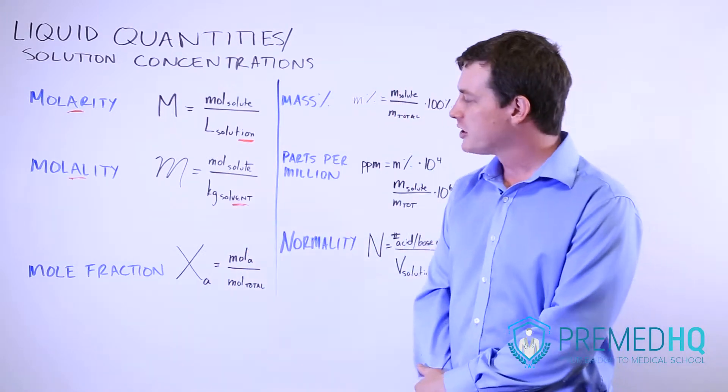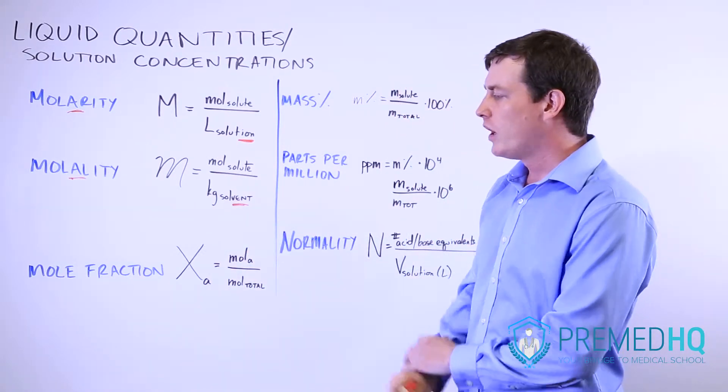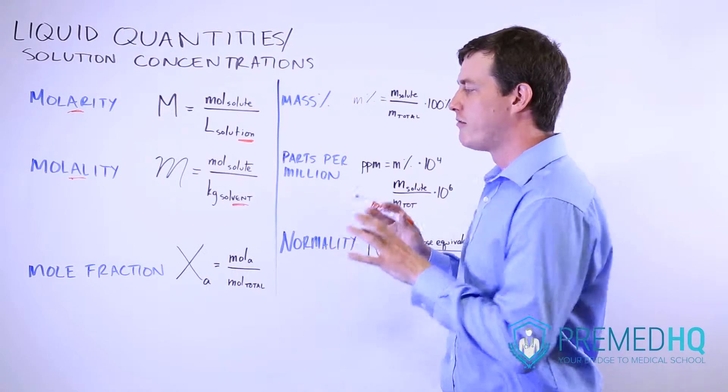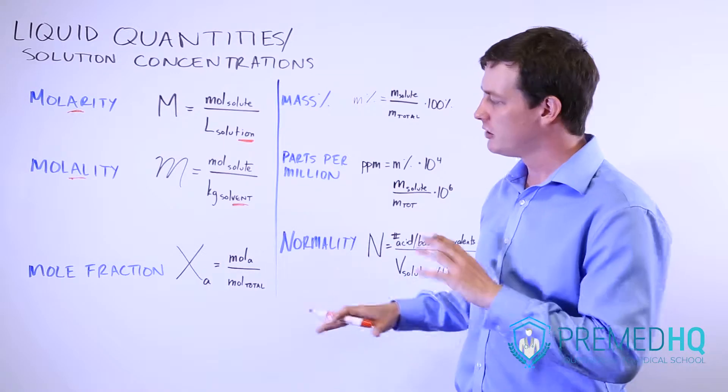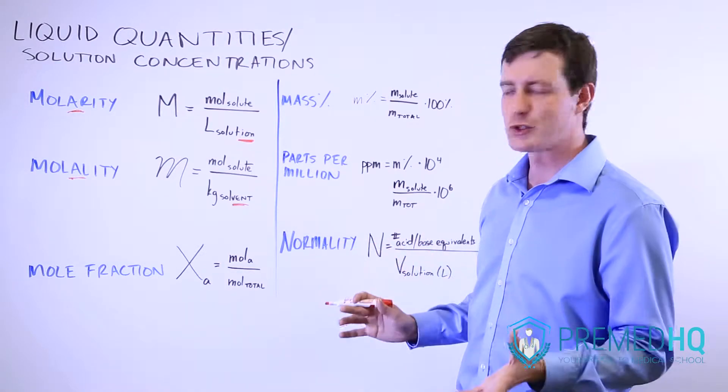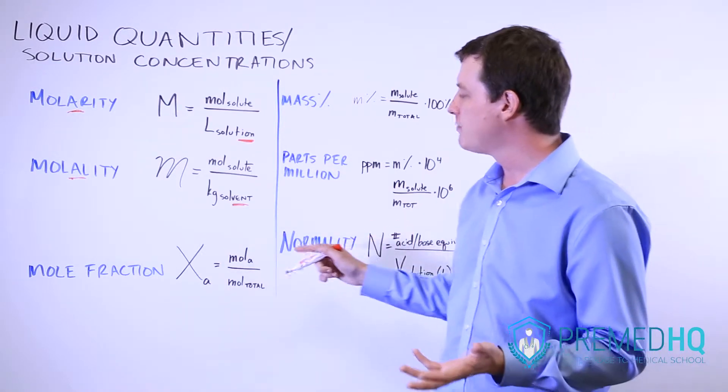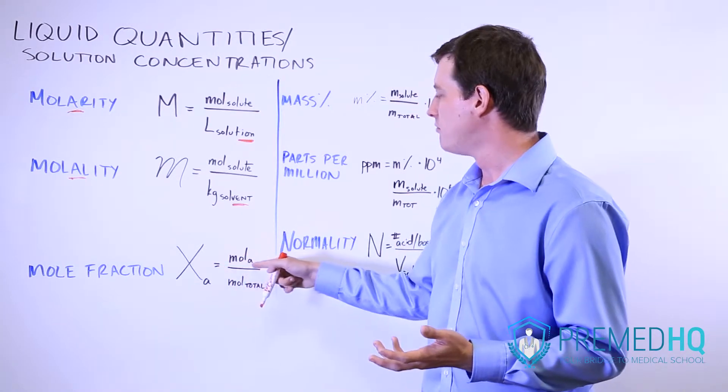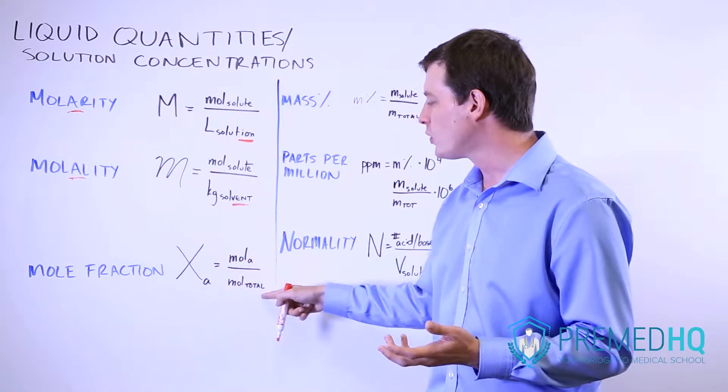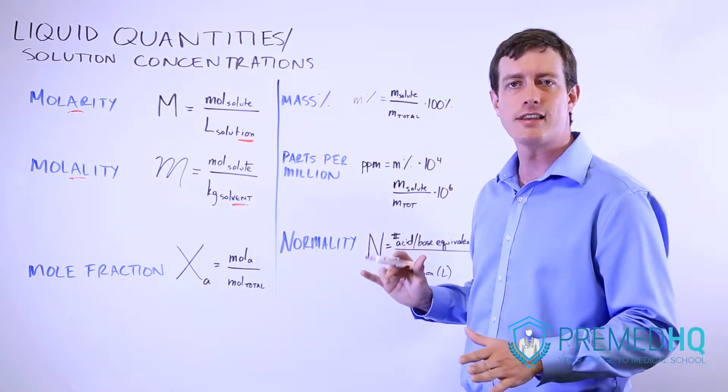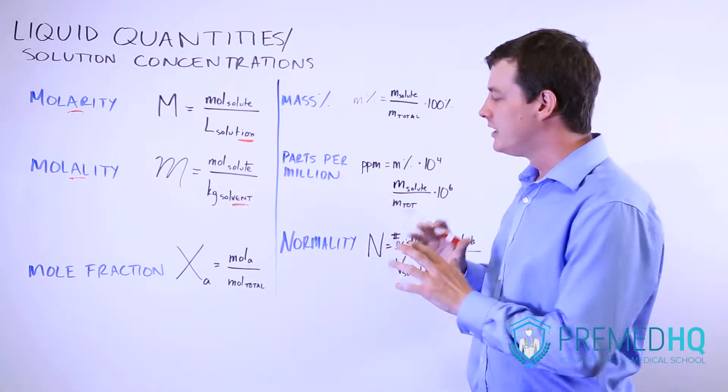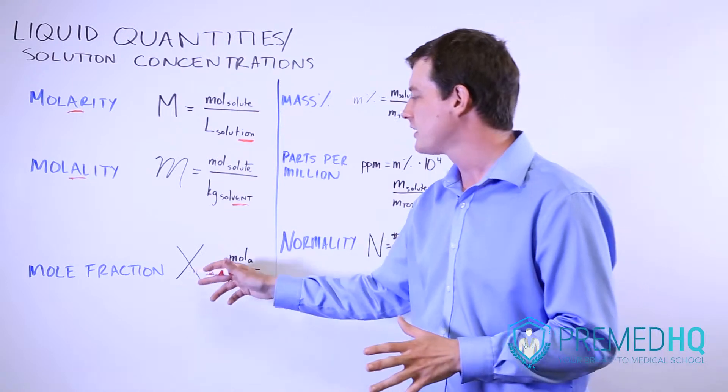A mole fraction is a way of measuring what is the comparative number of moles of one material relative to all of the material within a solution or within some sort of mixture. It's calculated by simply looking at the number of moles of that material over the total number of moles. It doesn't consider mass or anything like that, it purely considers the number of moles.